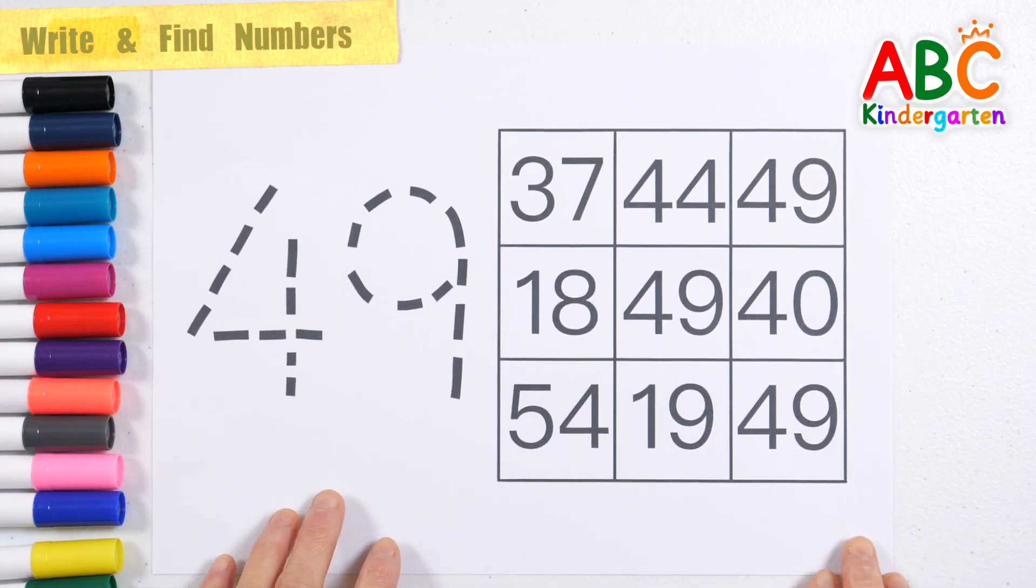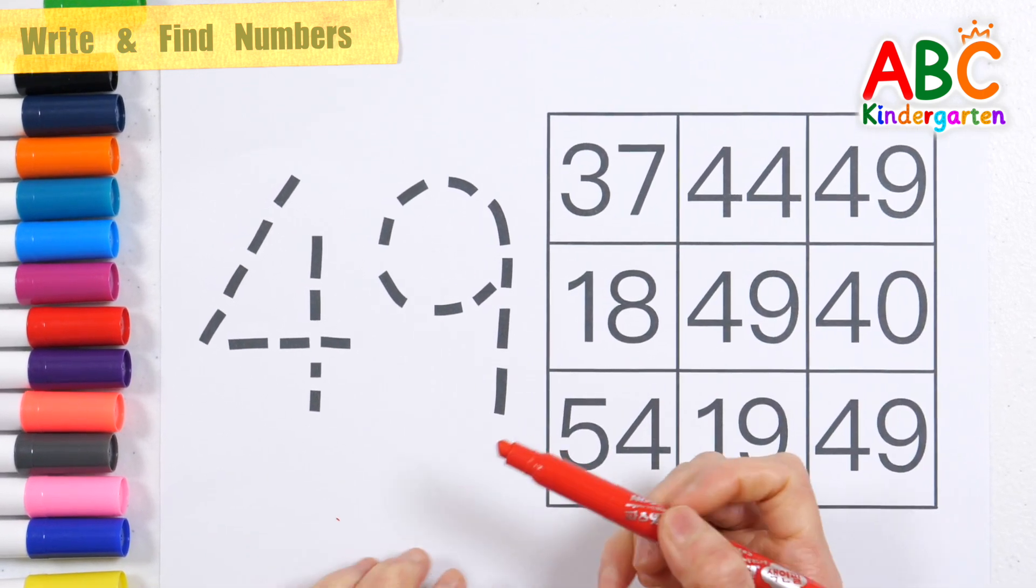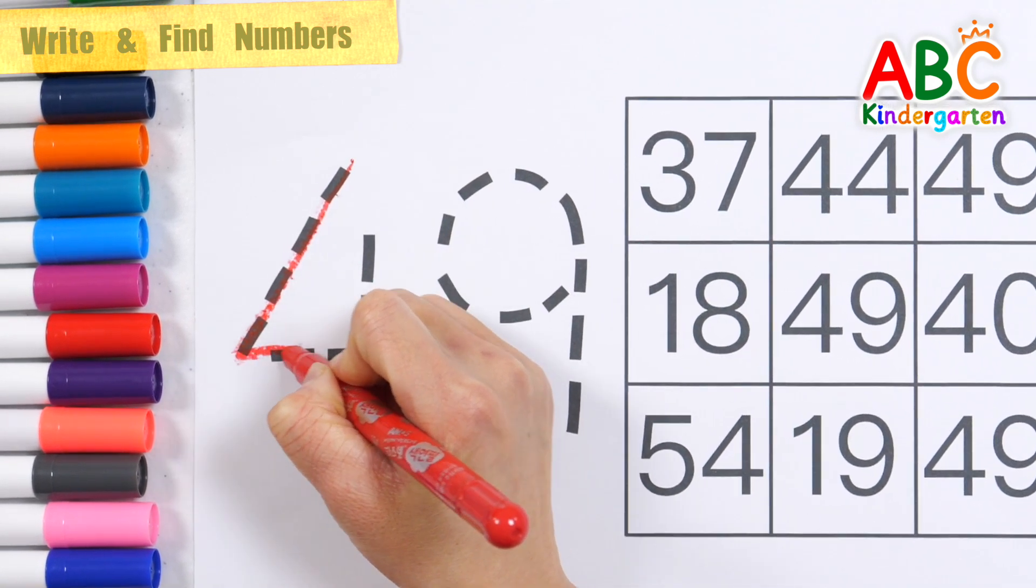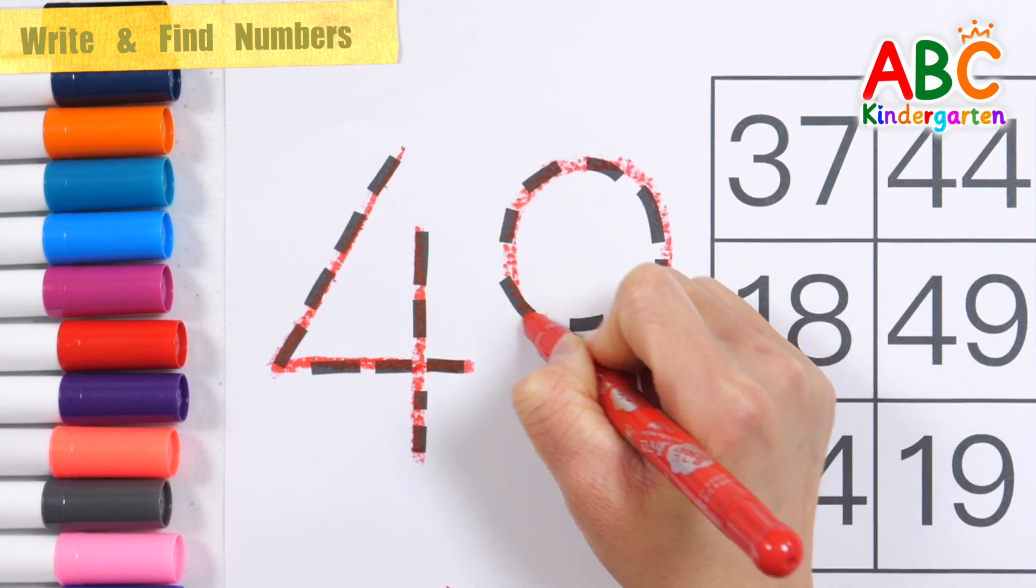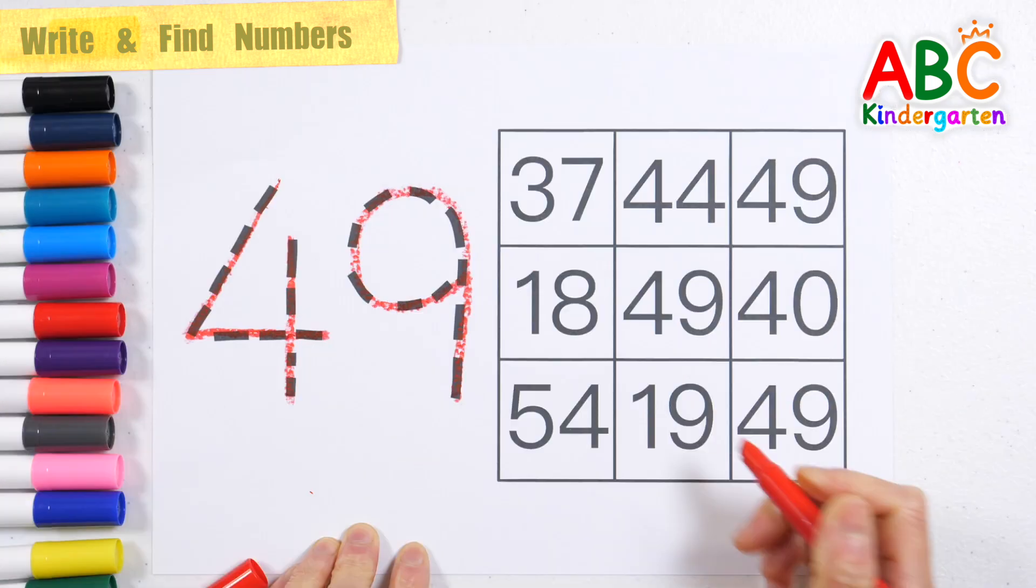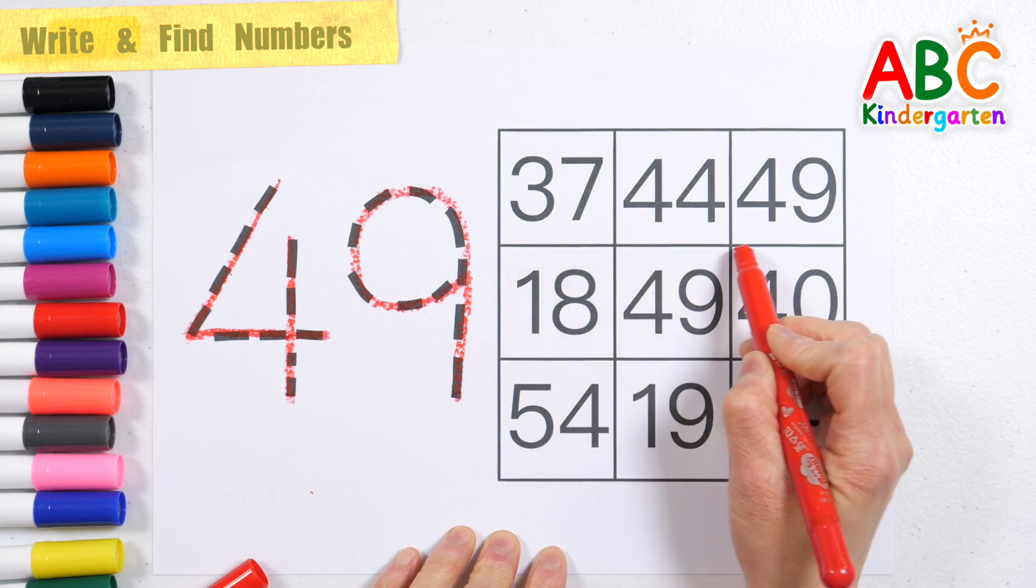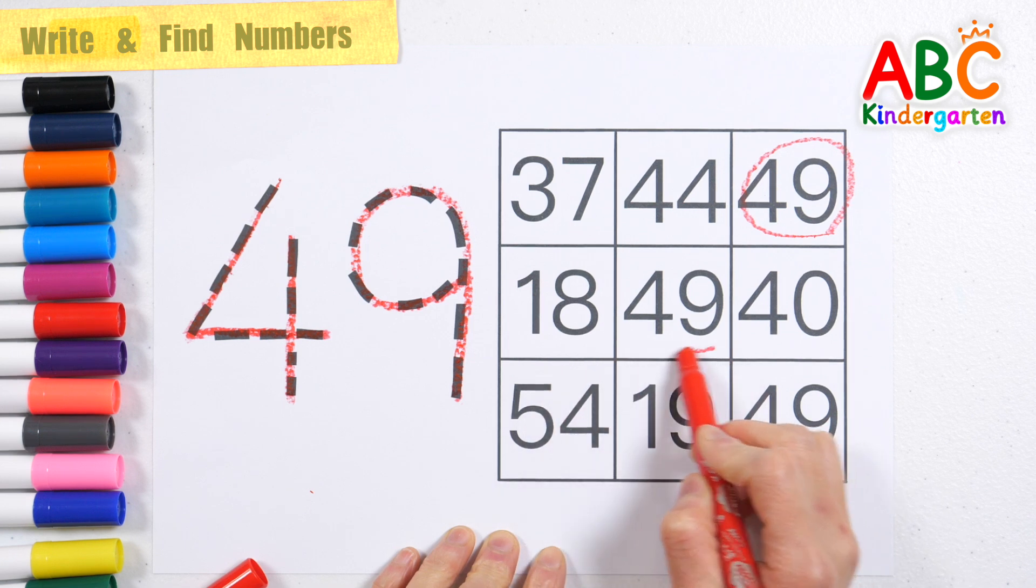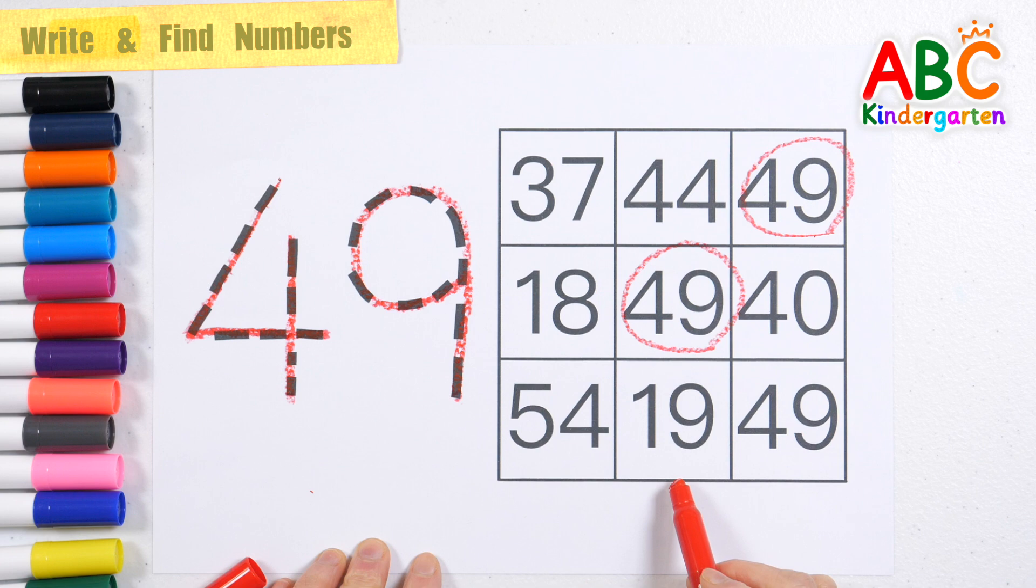Let's write the number forty-nine along the dotted lines. Forty-nine. Shall we find forty-nine on the right and circle it? Forty-seven. Forty-seven. Very good!